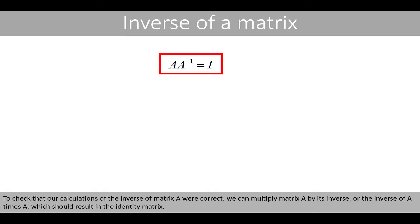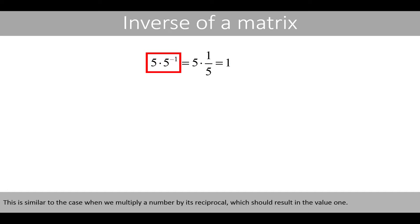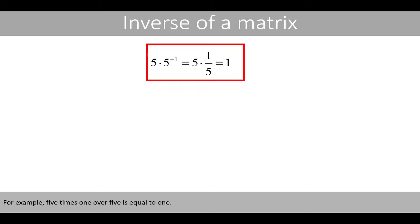To check that our calculations of the inverse of matrix A were correct, we can multiply matrix A by its inverse, or the inverse of A times A, which should result in the identity matrix. This is similar to the case when we multiply a number by its reciprocal, which should result in the value 1. For example, 5 times 1 over 5 is equal to 1.